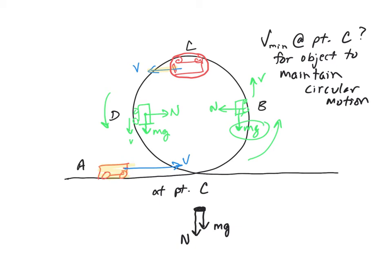Well, the slower I go, the normal force gets less. So as V decreases, the normal force at the top point also decreases.